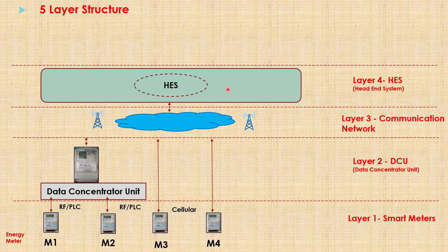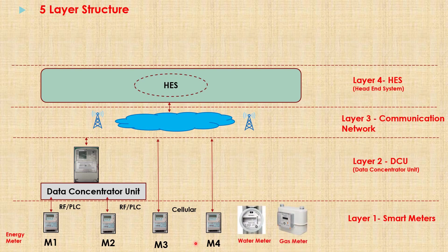Basically, in this complete system, the head-end system works like a client and the smart meter works like a server. This AMI system is not only meant for reading energy meter readings — it also has the capability to read water meter and gas meter readings. These meters also use different types of technology to send their meter data to the head-end system.